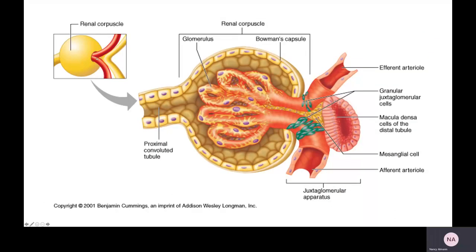Here is the renal corpuscle. You can see the afferent arteriole leading into the glomerulus and the efferent arteriole pulling blood out. Here is the afferent arteriole, here is the efferent arteriole, here is the glomerulus with those podocytes, and here is Bowman's capsule leading to the proximal convoluted tubule.